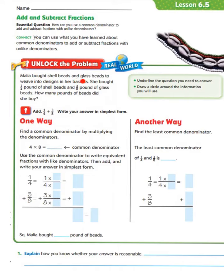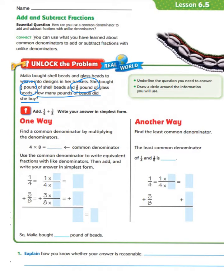Malia bought shell beads and glass beads to weave into designs in her basket. She bought one-fourth pound of shell beads and three-eighths pounds of glass beads. How many pounds of beads did she buy? With any word problem, we need to underline the question we need to answer: how many pounds of beads did she buy? We also need to circle the key information: she bought one-fourth pound of shell beads and three-eighths pounds of glass beads. Those two fractions are key.